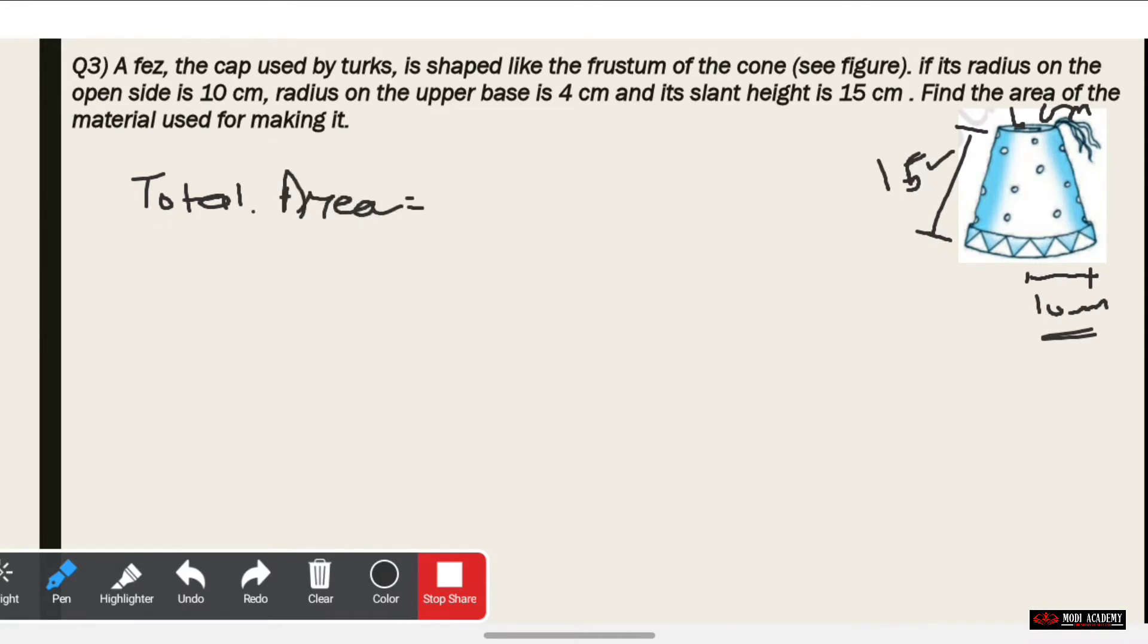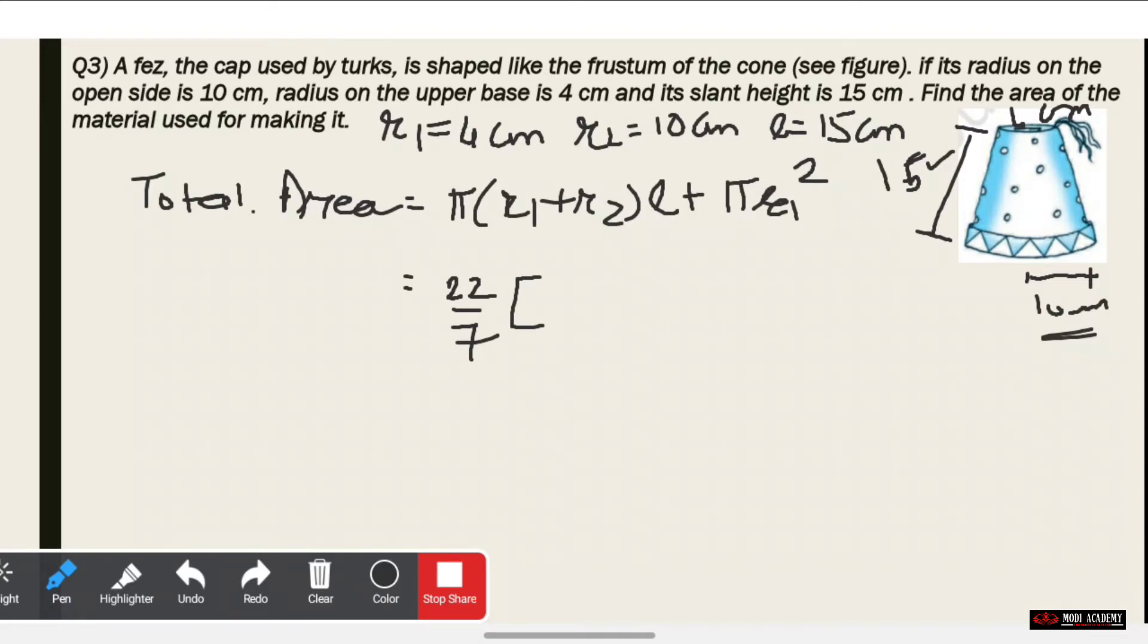The total surface area will be equal to π(r1 + r2)L + πr1². If we consider r1 = 4 cm, r2 = 10 cm, and L = 15 cm, we use 22/7 for π. So it equals π[(r1 + r2)L + r1²], which is 22/7 × [(4 + 10) × 15 + 16].